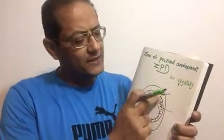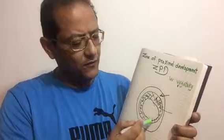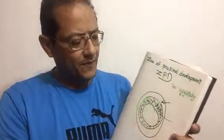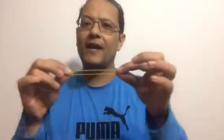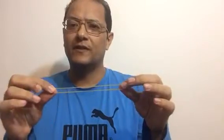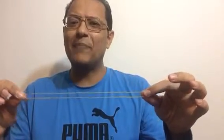I can also explain this through a rubber band. This is our comfort zone — this rubber band represents our comfort zone. The stretching zone is the zone where we need assistance through training, mentoring, or whatever.